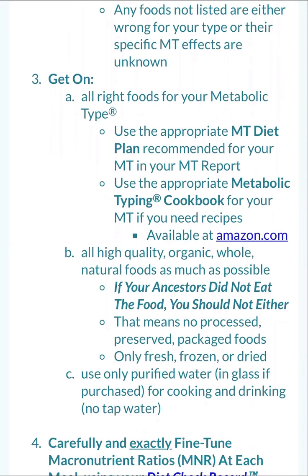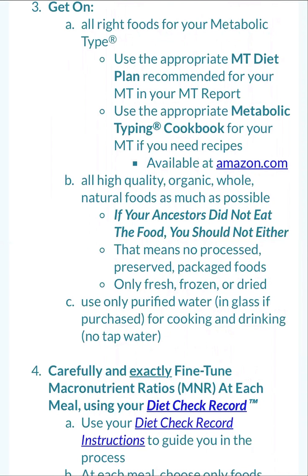The next step is to get on all the right foods for your metabolic type. You're going to see that one of the documents you have is your particular food list for your metabolic type. You want to use quality, organic, whole natural foods. There's a great section that explains that if your ancestors did not eat that food, you should not either. So for example, if you were an Eskimo with a very high fat protein diet, chances are that's the way you're going to be eating.